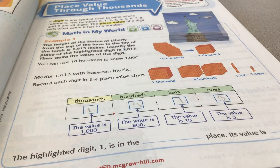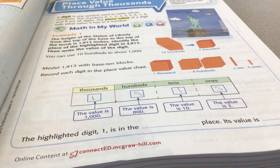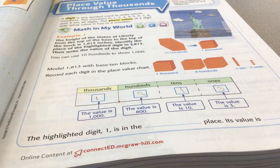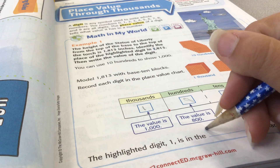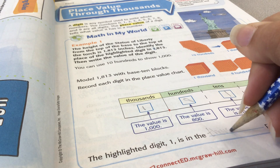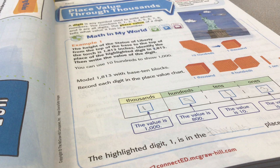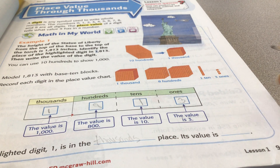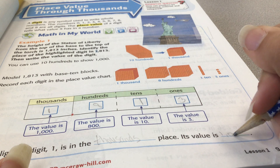The highlighted digit 1 is in the blank place, and its value is blank. So let's look at this — which one has a 1? 1,000. So it's in the thousands place. We write thousands place. The value is 1,000.